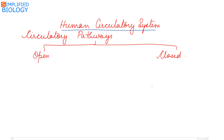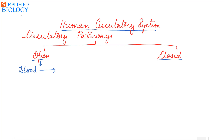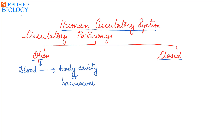Before going to the Human Circulatory System, let's see the two different types of circulatory pathways. The two circulatory pathways are the open circulatory system and the closed circulatory system. In the open circulatory system, blood from the heart is pumped into an open space — the body cavity, also known as the Haemocoel, also referred to as the Sinuses. Such types are seen in arthropods and in mollusks.